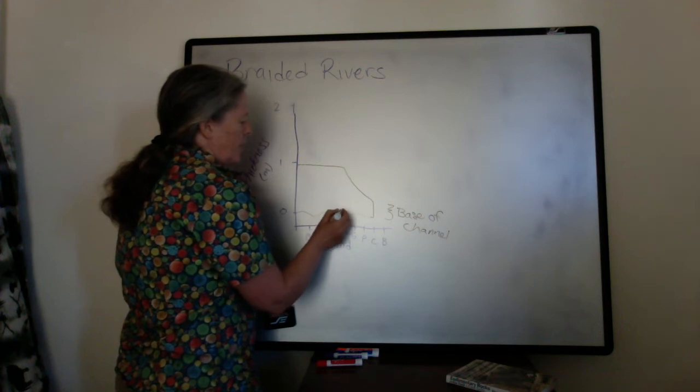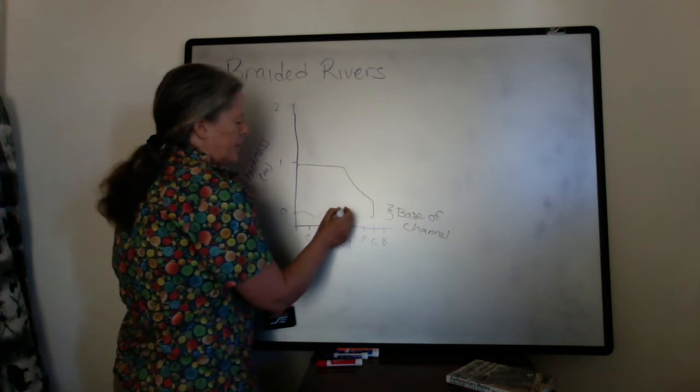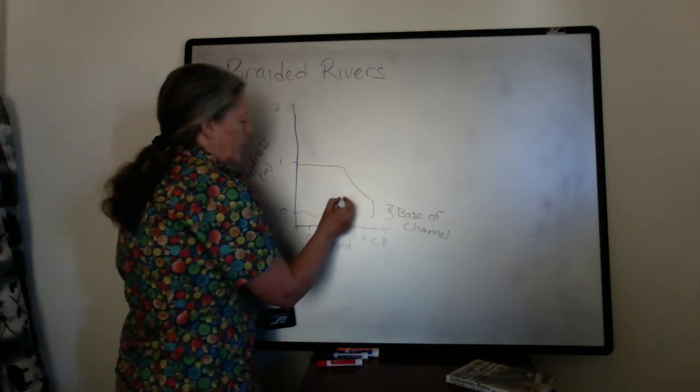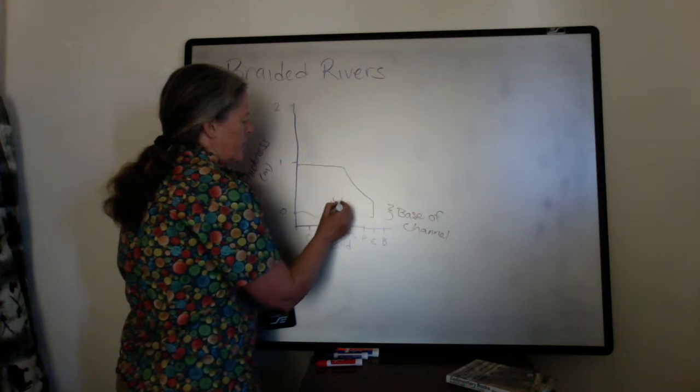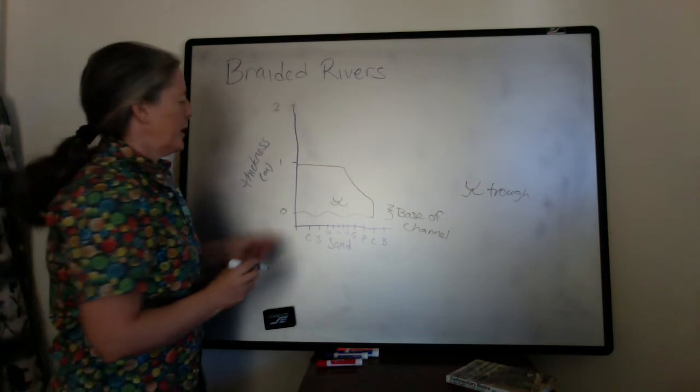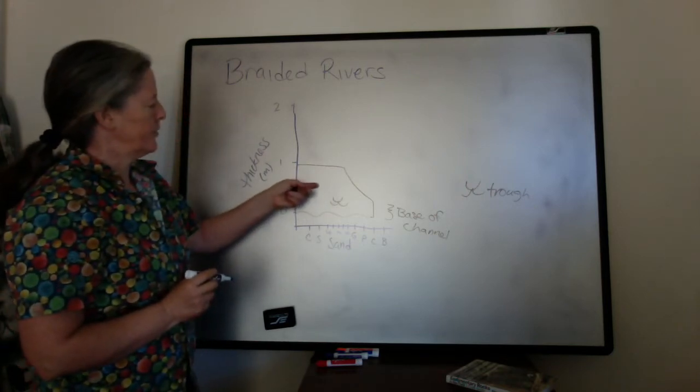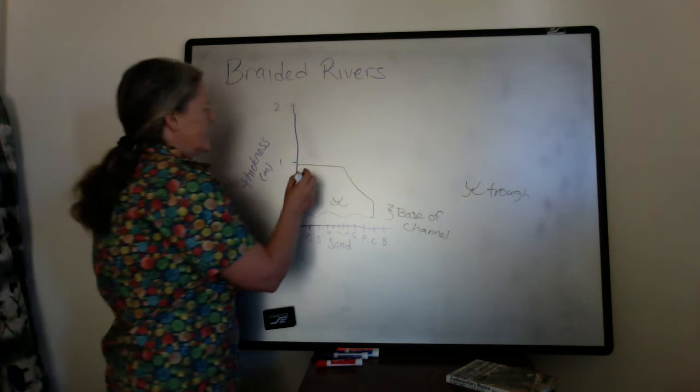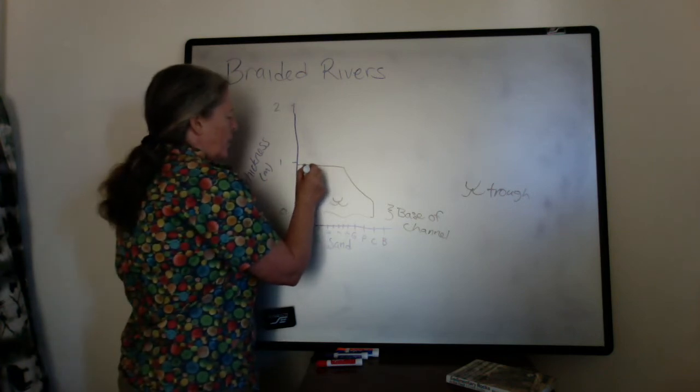And if we think about the sedimentary structures down here, there might be some planar lamination. But the trough cross stratification is more common. As you get further up into the area here, you can end up with ripples.